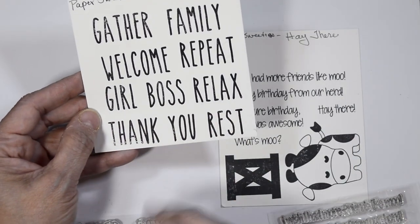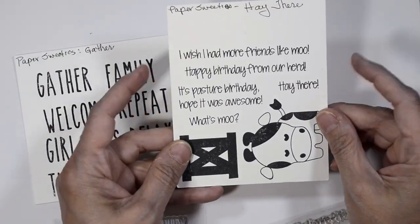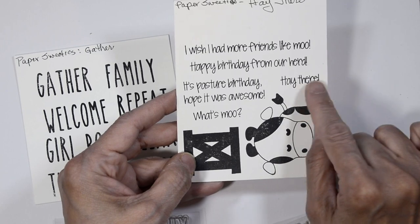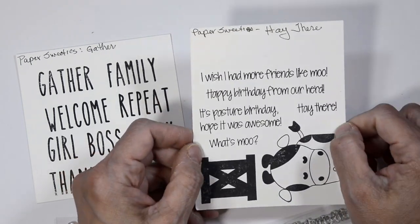The new set has the words gather, welcome, repeat, girl boss, thank you, and rest. We're going to just use the you from that. From the hey there we're going to use our little cow and the sentiment hey there.